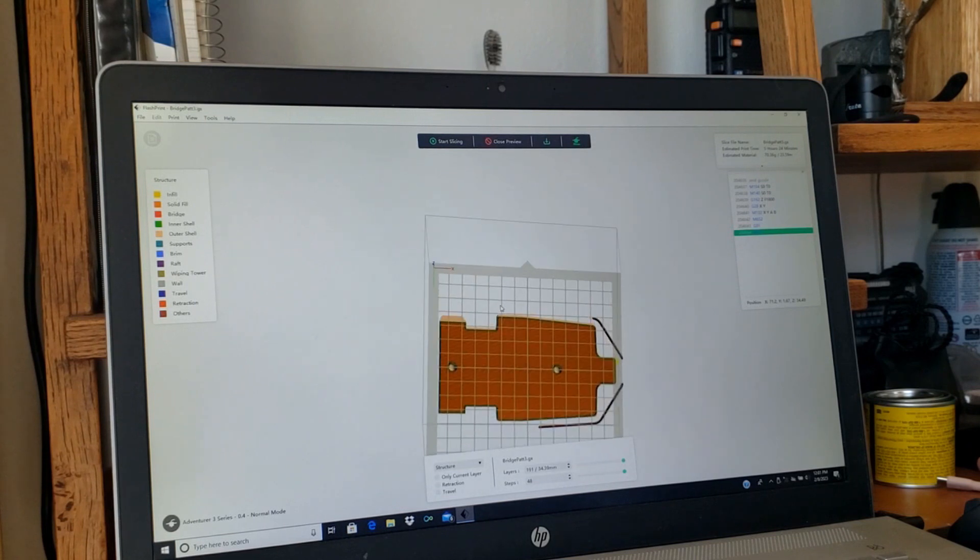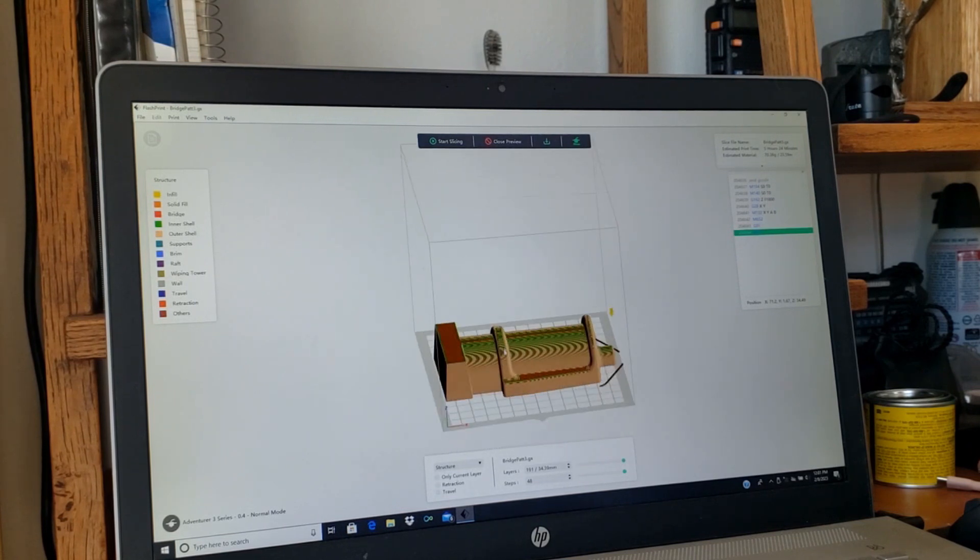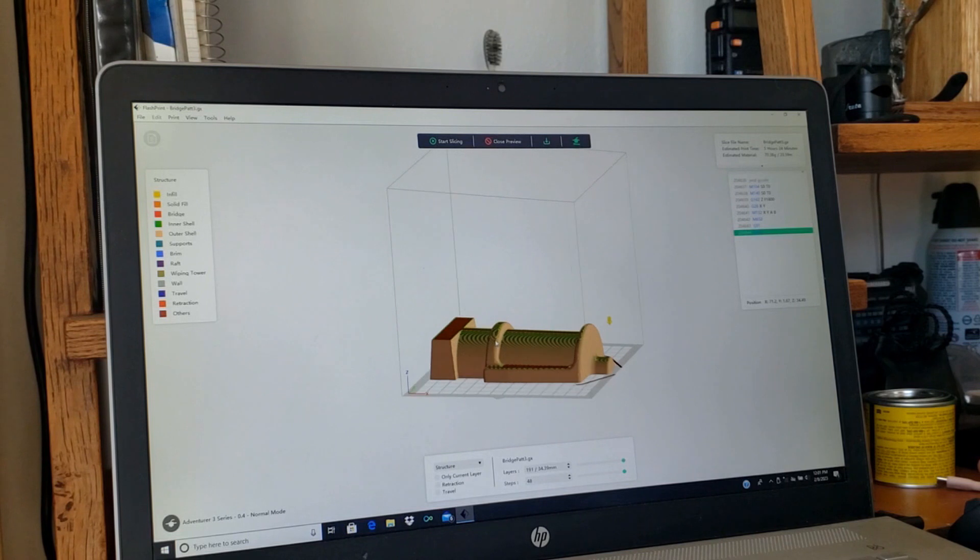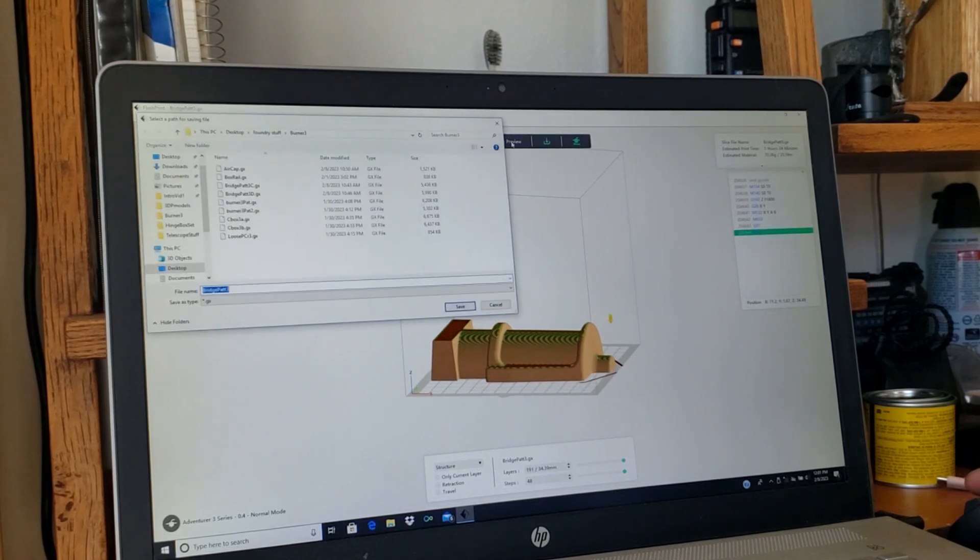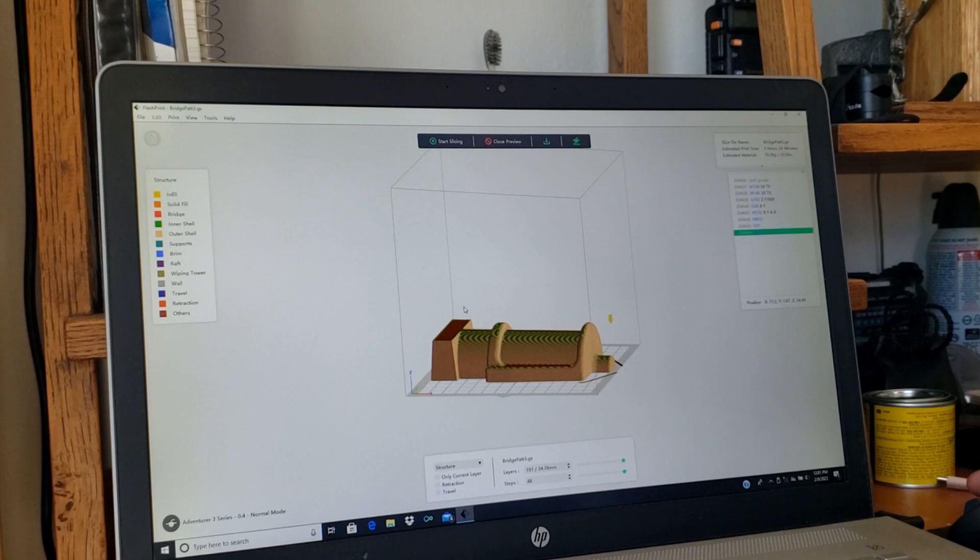It's got my toolpath up there, and I will save it as a .gx file in FlashForge slicer, and we'll double check and make sure all the parameters I set were right before I make any other changes or get into a new model. So let's see how it looks.